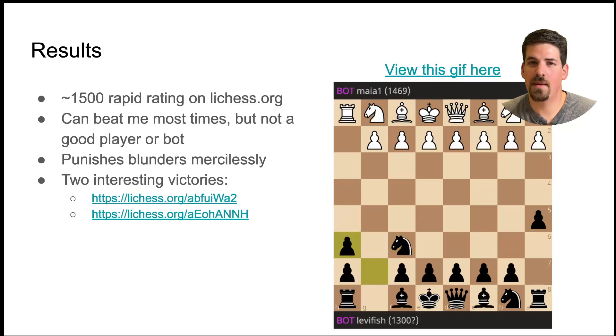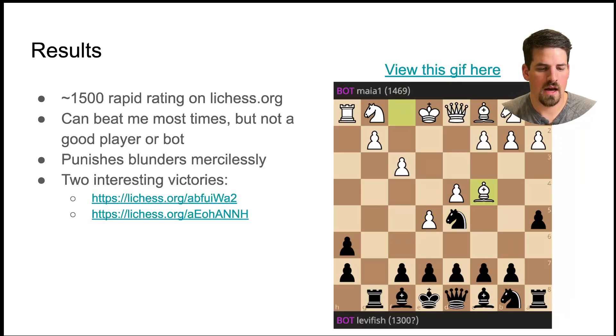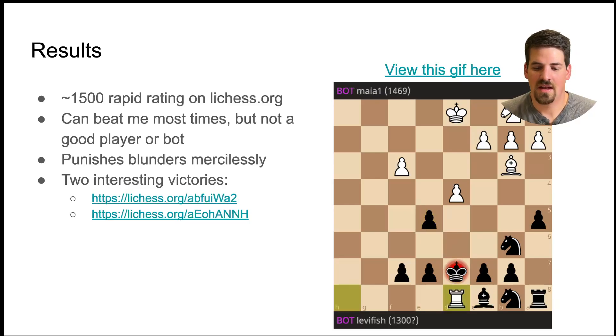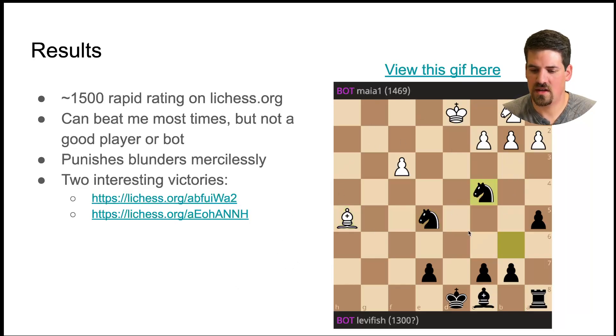The results I had, I achieved about a 1500 rapid rating on LiChess.org, which was enough to beat the Maia 1 bot that's available there. It can beat me almost every time, but not a better player than me. So I'm sure that there are plenty of human players out there that could beat this bot. It does punish blunders very quickly. So if you leave a piece unprotected, it will immediately take that piece. And it does not miss any unprotected pieces. If you're interested in looking into it more, I've linked here a few of the games that it's played against Maia 1 that are interesting to look into in more depth. This animated gif here is one of those games. And you can find that link as well.